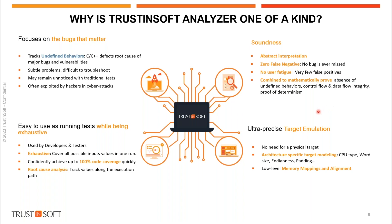We also have a very unique feature called hardware awareness — a key advantage for embedded software. It is the ability to represent the target hardware within the analysis, eliminating the need for real hardware or an emulator. The developer can define the hardware architecture: CPU type, word size, endianness, padding, and even low-level memory mapping with concrete real addresses. The analysis is performed with the characteristics of the final hardware, not the host hardware, making it more representative and generating fewer false alarms.